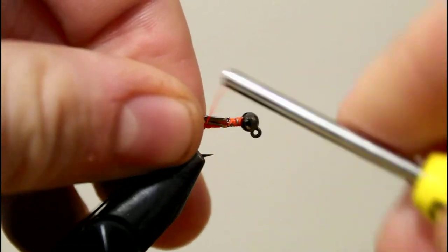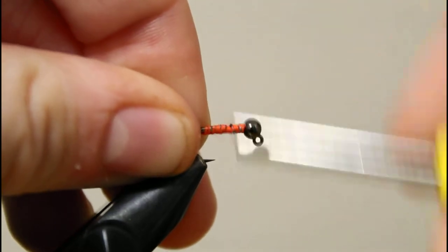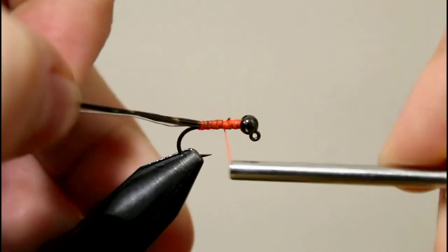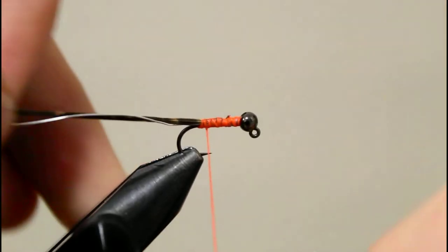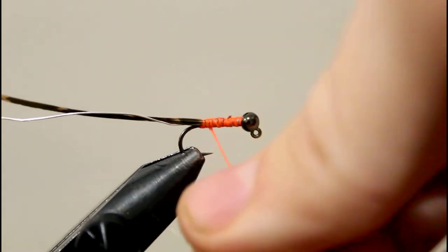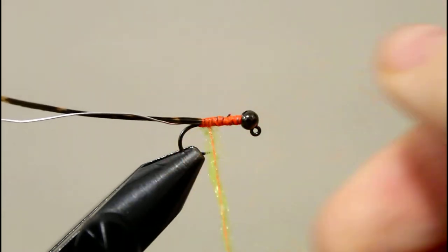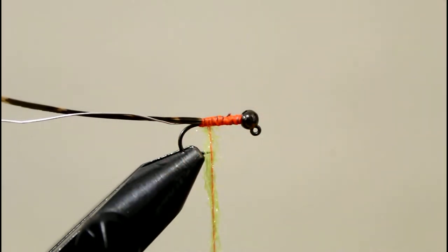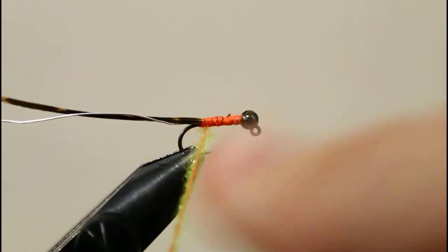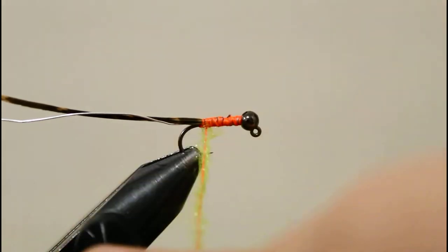From there I'm gonna get some green ice dubbing on my thread—I believe this is caddis green. You can do regular dubbing, rabbit dubbing, squirrel dubbing, you name it—just green works best for me. With variations you can use other colors. I'm just making sure I got enough on there to make a nice body.